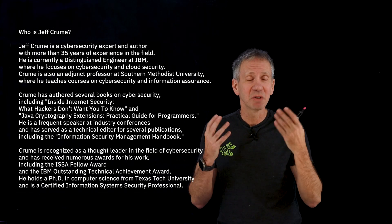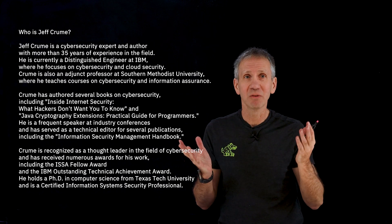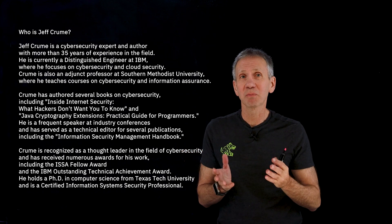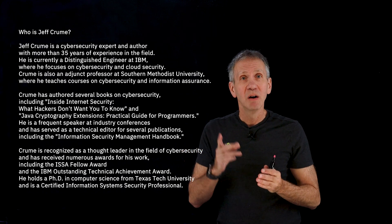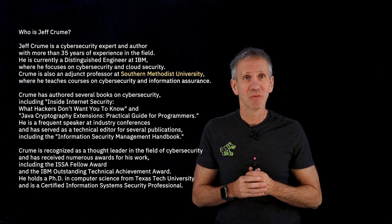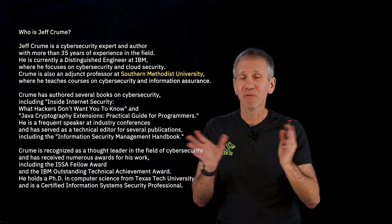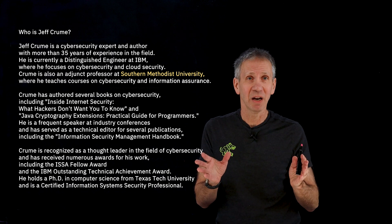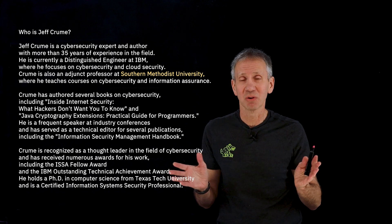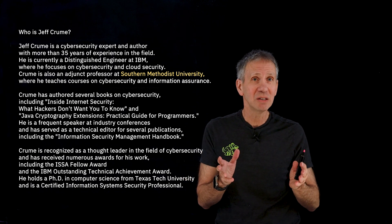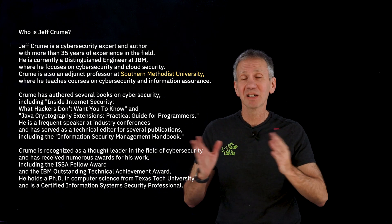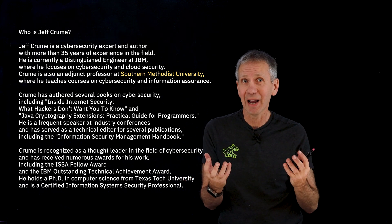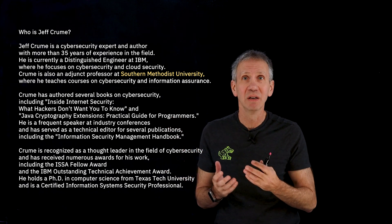Then it says I'm a distinguished engineer at IBM — okay, we're doing really well. And then it says I'm an adjunct professor, which is true. But it says at Southern Methodist University, which is a fine academic institution, but I've never been there — not once in my life. I have no association with SMU. I actually teach at North Carolina State University in a completely different state. So how did that happen? I don't know. Let's keep going.